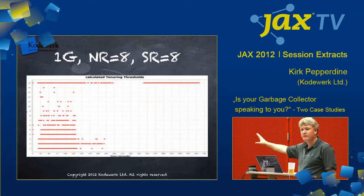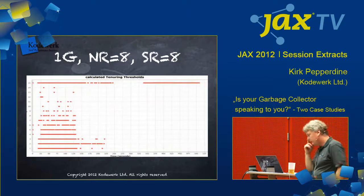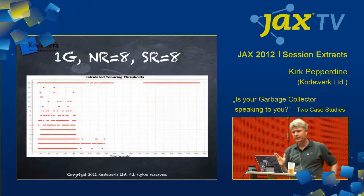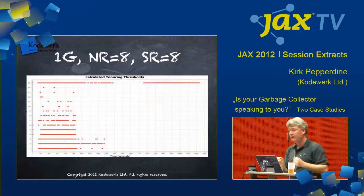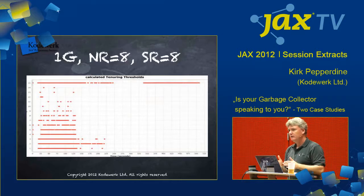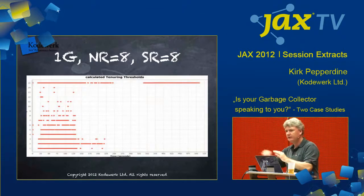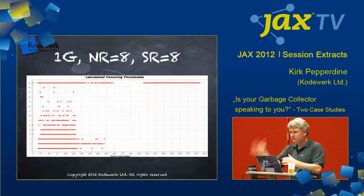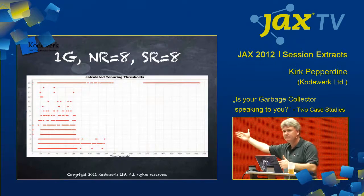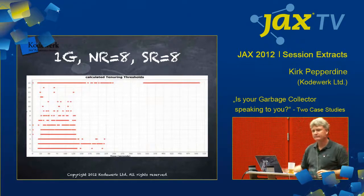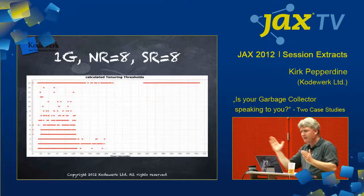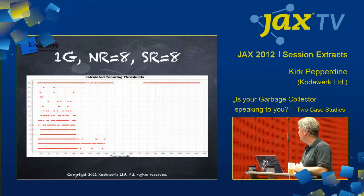So you want to look at measurements like this to tell you: are my survivor spaces big enough, or are they too small? And where should my tenuring threshold be? One of the things you want to do with tenuring threshold is, when you start looking at this data, decide that my garbage collector is catching most of the objects that are going to die at about age six or seven. So after age six or seven, if my tenuring threshold is 15, all those objects are going to get promoted anyway. So we can reduce copy costs by just saying when they reach age seven, promote them — they're going to live anyway. There's a balance that you want to bring to the table in that case.